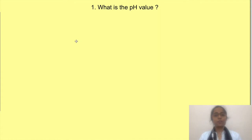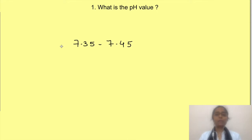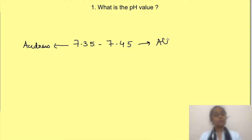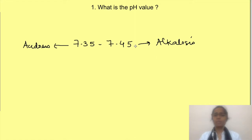Normal pH of extracellular fluid ranges from 7.35 to 7.45. Clinically, when the pH decreases below 7.35 it is known as acidosis, while if it increases above 7.45 it is known as alkalosis. So first and foremost we need to see the value of pH — if it is less than 7.35 it's acidosis, more than 7.45 it's alkalosis.